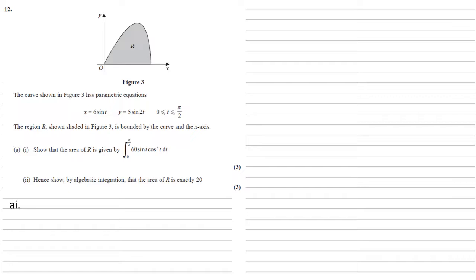The curve shown in Figure 3 has parametric equations x equals 6 sine t, y equals 5 sine 2t, for t between 0 and pi over 2. The region R, shown shaded in Figure 3, is bounded by the curve and the x-axis.